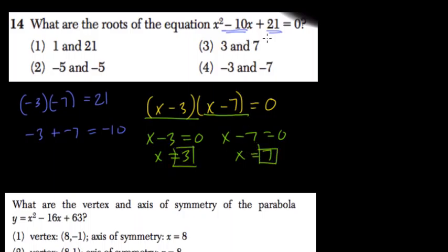So 3 and 7, choice 3. You can also plug these values in to check, or you can just do that to begin with. If you plug in 3 or 7 into this formula, you will get 0. So those are the roots.